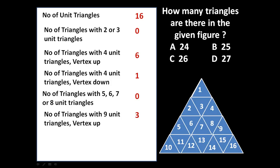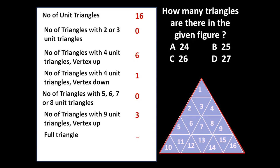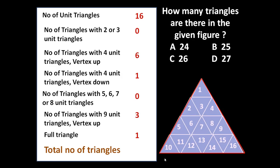So after this let us find out the full triangle — how many full triangles are there? Obviously only one full triangle is there, so let us write one. We started from one unit triangle and reached the full triangle. Always start counting from the smallest figure and proceed to the full figure — this is the procedure to be adopted for solving such problems. So total number of triangles: 16 plus 6 is 22, plus 1 is 23, plus 3 is 26, plus 1 is 27. Total 27 triangles can be formed in this figure.